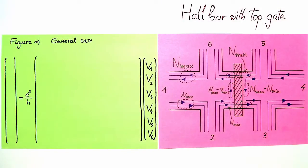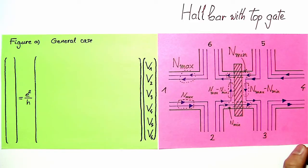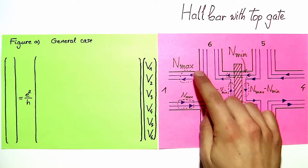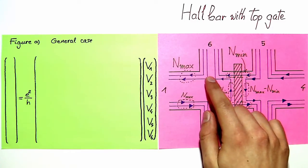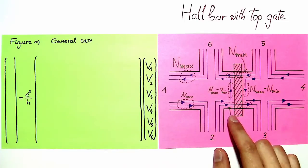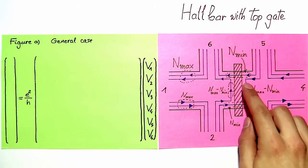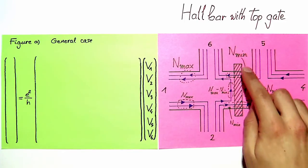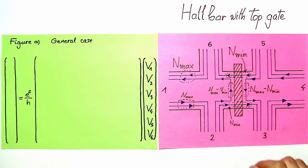We will now describe a generalized case of the situation shown in figure A, which is drawn again here, with the top gate in the middle selectively reflecting innermost edge channels. We assume that we have a number n_max of edge channels along the edge in the bulk of the sample far from the top gate, and that under the top gate n_min edge channels are transmitted.